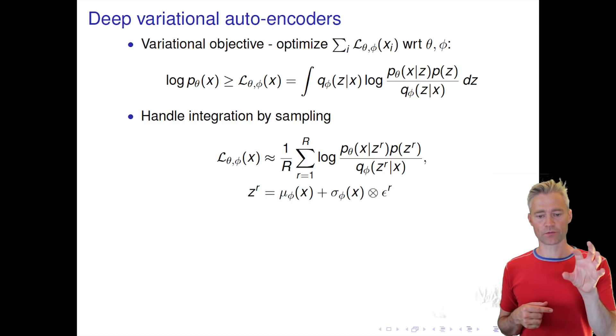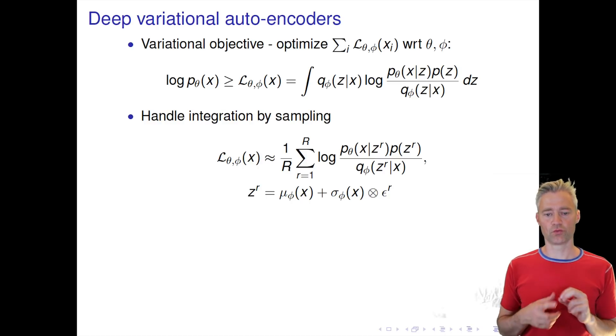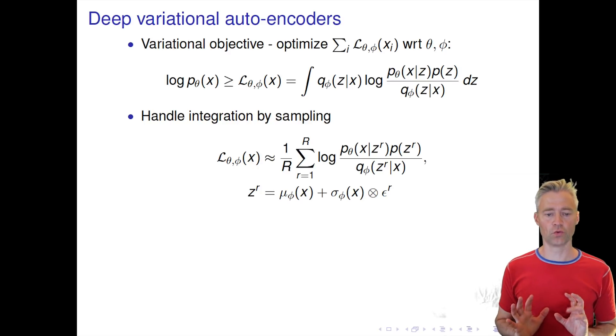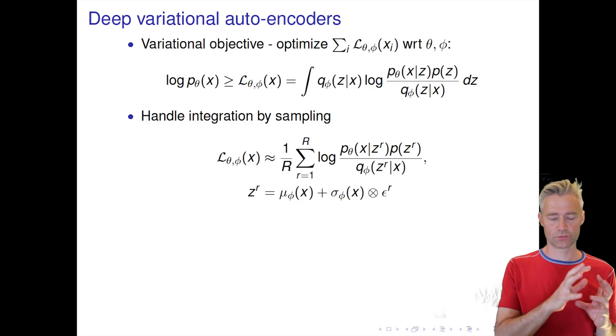So now we have a bound for one example, and then we should say that our likelihood bound is the sum over this for all examples. We can now take derivatives of this bound with respect to θ and φ.